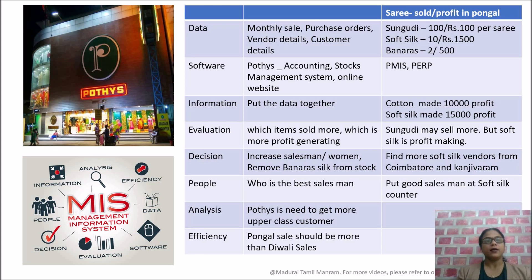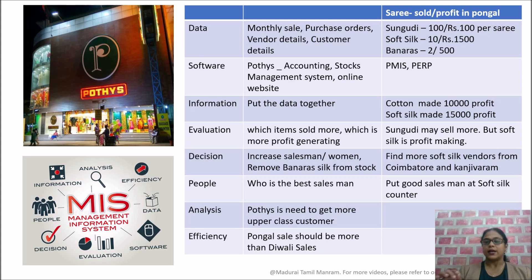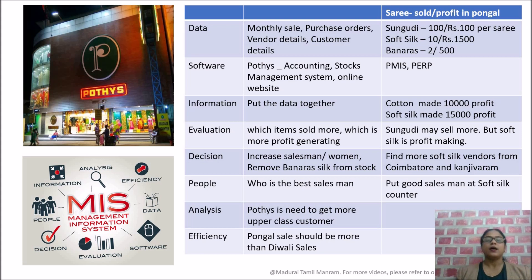Let's start from the word data. What do we have? Monthly sales, purchase orders, vendor details, customer details, advertisement messages — you can store this data. For example, if you want to track monthly sales, you can record 100 saris, 10 saris, and calculate a monthly sales profit. With average sales, you get a monthly sales profit figure.